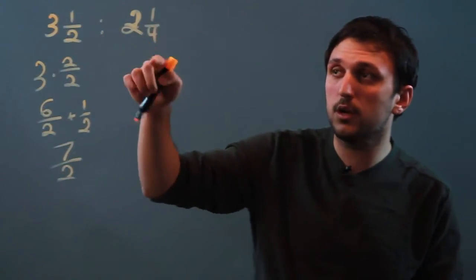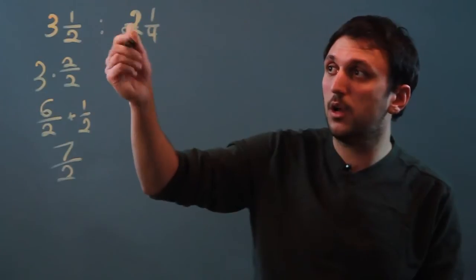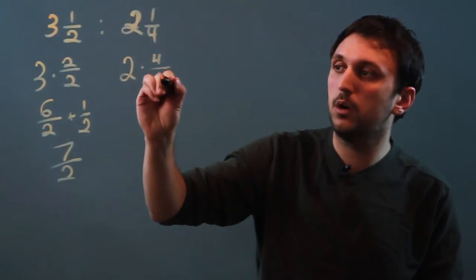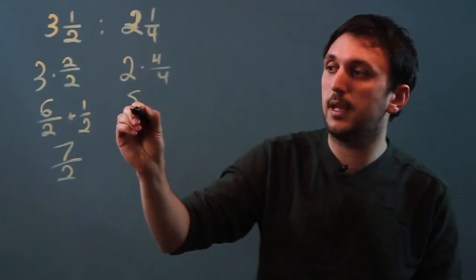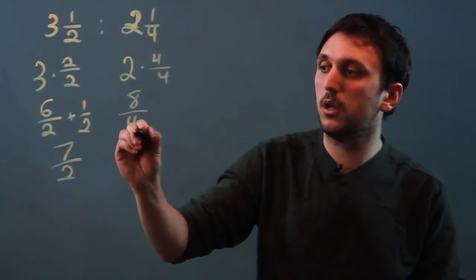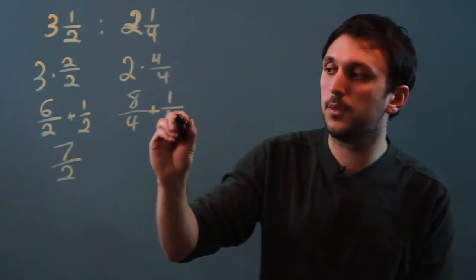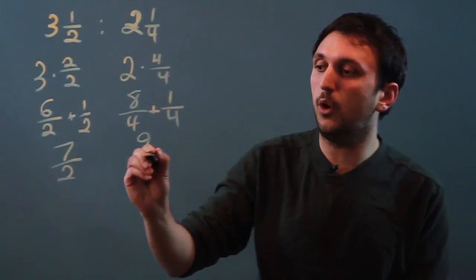Then over here we have a denominator of four so we have this two. We're going to multiply it by four over four which gives us eight over four and we still have this extra one-fourth, so we add one-fourth and we get nine over four.